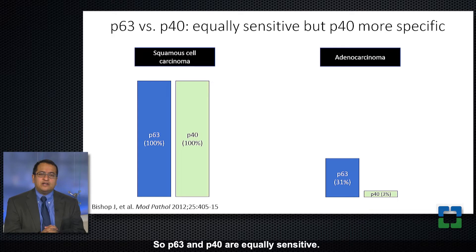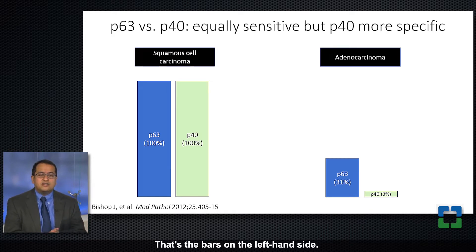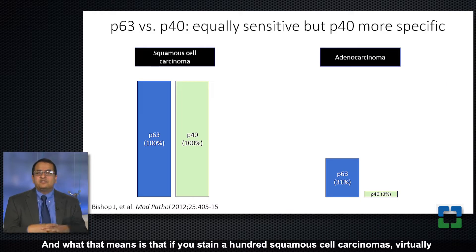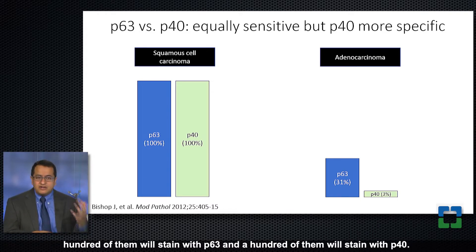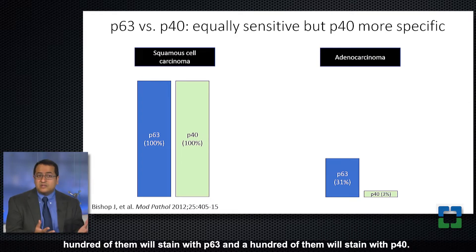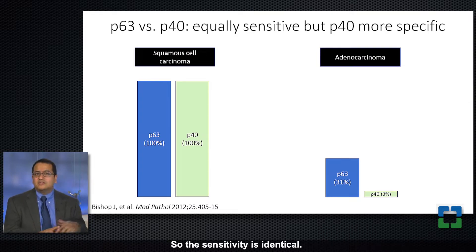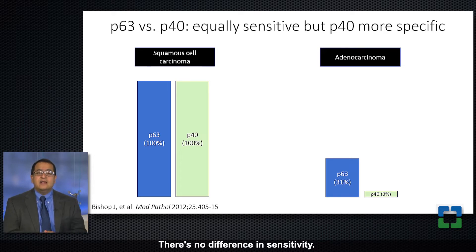p63 and p40 are equally sensitive — that's the bars on the left-hand side — meaning that if you stain a hundred squamous cell carcinomas, virtually all of them will stain with p63 and all of them will stain with p40. So the sensitivity is identical; there's no difference in sensitivity.